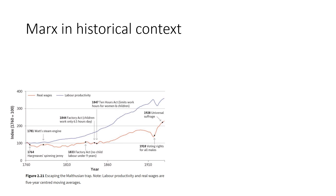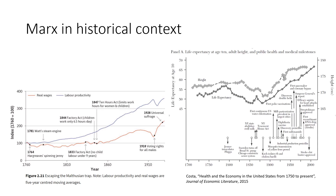Thinking about the historical context, we have a graph illustrating things escaping the Malthusian trap. A number of reasons existed beyond permanent technological progress — many institutions were implemented in this time period. You can see the Ten Hours Act and the Factory Act, which instituted things like child labor laws and mandatory constraints on maximum working hours per day. The graph on the right illustrates that over this same time period, these policies were instituted, and as a result, individuals have higher life expectancies. Scientific discoveries also played a role in increasing life expectancy.